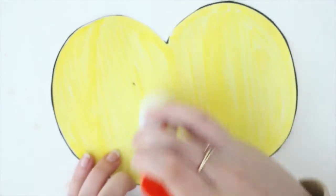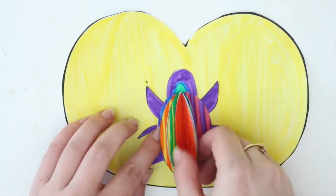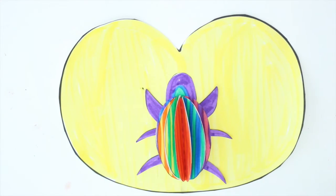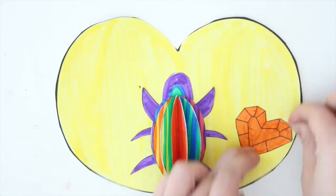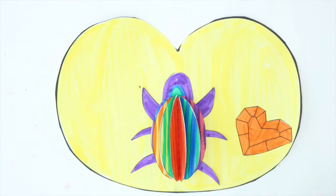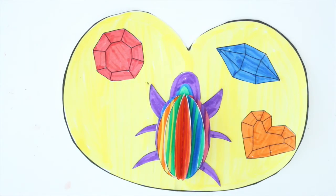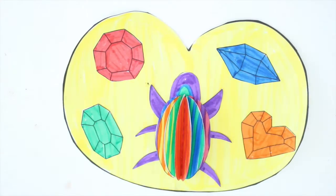Glue your bug onto your amulet wherever you would like it. I chose to glue it in the middle, and then you can add your jewels. You can add as many or as few as you would like. I decided to add all of them because I like a flashy amulet that I can show off.